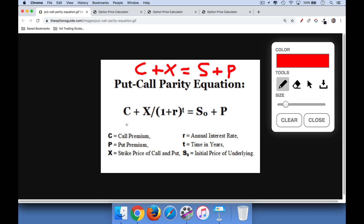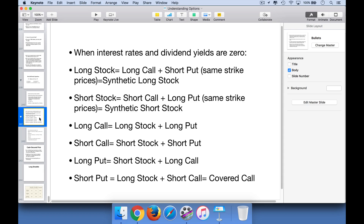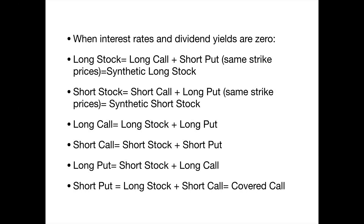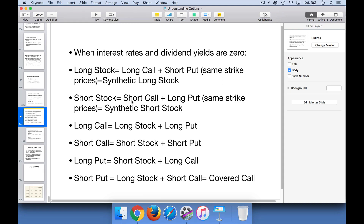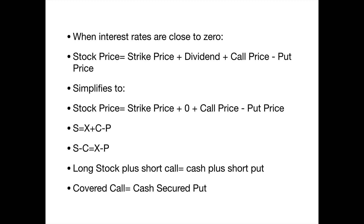The two key takeaways are: C plus X equals S plus P, and if we add the dividend piece, the dividend plus the strike price plus the call price minus the put price equals the stock price — that's the dividend form of put-call parity. It's most helpful as an approximation. It's not something you're ever going to be arbitraging, but if you need to think through what's a long call, a short call, synthetic long, synthetic short stock, or covered call being equal to a cash-secured put, it's a very useful tool. Now that we understand why a covered call equals a cash-secured put, we can move forward in the next lecture and round out this section of the course by talking about cash-secured puts.